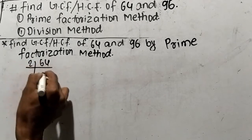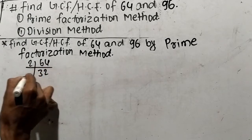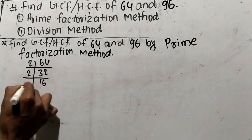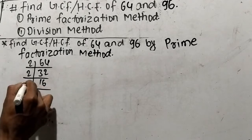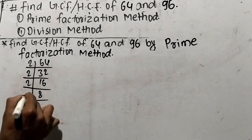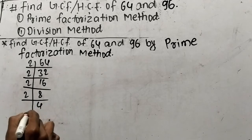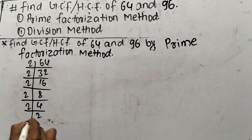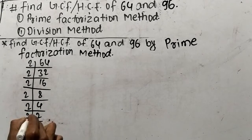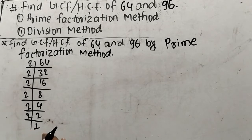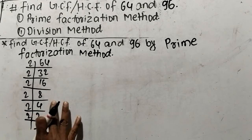64 is 2 times 32, 32 is 2 times 16, 16 is 2 times 8, 8 is 2 times 4, 4 is 2 times 2, and 2 is 2 times 1. So as you look here, we have found out the prime factors of 64.